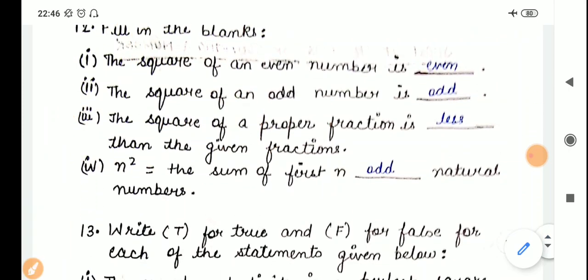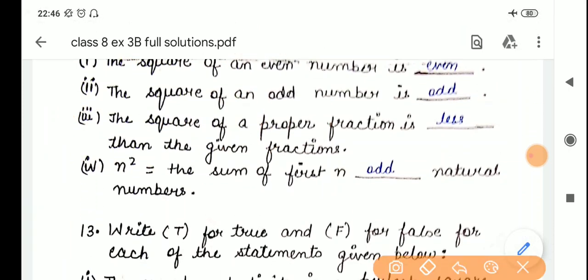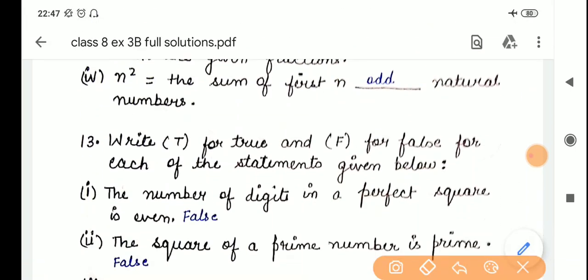Now, coming to the next part, that is, n square is equal to the sum of first n odd natural numbers. Okay? Now, coming to the 13th question, that is, write true or false for each of the statements given below.